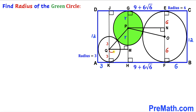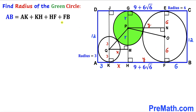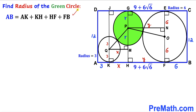I label segment MQ as lowercase x. Since segment MQ equals segment KH, if MQ is x then KH is x as well. I label segment NQ as y. Since NQ equals segment FH, FH is y as well. The whole side length AB equals the sum of these individual segments: 3, x, y, and 6.